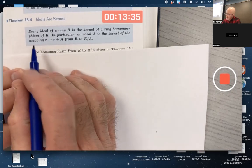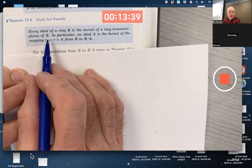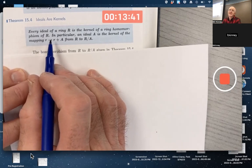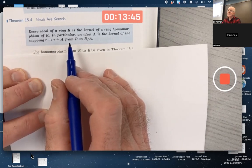This theorem says every ideal of a ring R is the kernel of a ring homomorphism of R. They could have stopped the theorem right there, but they added a second sentence to make it more clear what they're talking about and make it easier to prove.